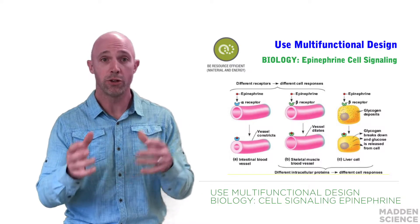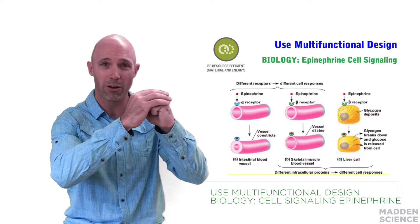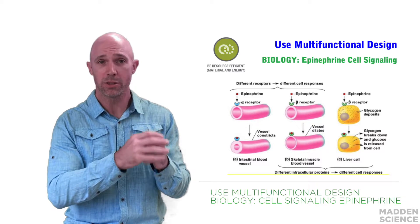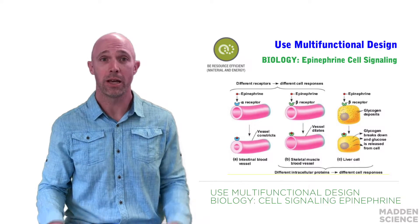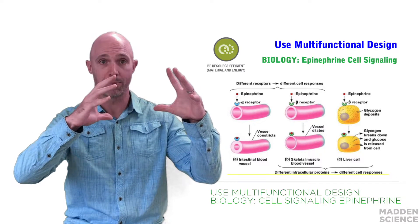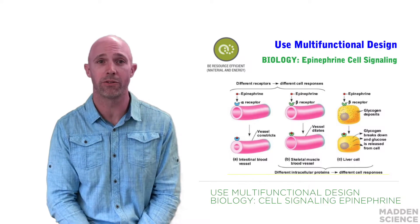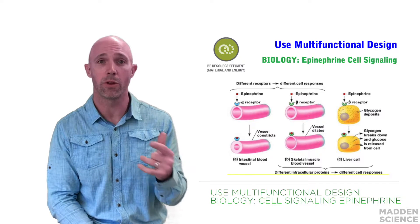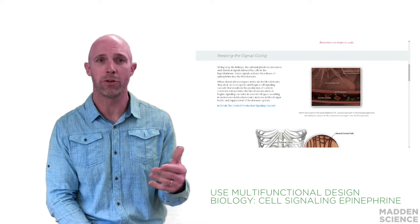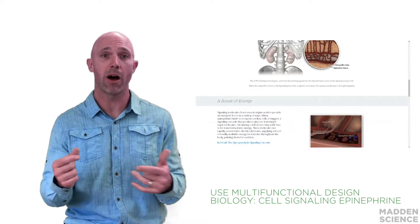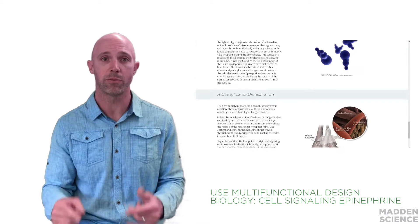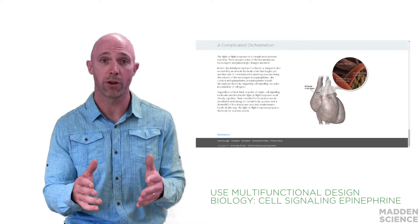One function is to constrict intestinal blood vessels — the alpha receptor — and the other signal receptor, beta, is present on skeletal muscles and blood vessels and signals for those vessels to dilate. Beta receptors are also present on liver cells, where epinephrine signals for the breakdown of glycogen into glucose. Animal nervous and endocrine systems have evolved signaling pathways that take advantage of, and follow, the life's principle: use multifunctional design.